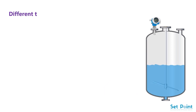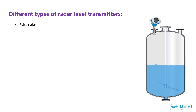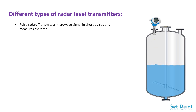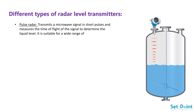Different types of radar level transmitters. Pulse radar transmits a microwave signal in short pulses and measures the time of flight of the signal to determine the liquid level. It is suitable for a wide range of media and industrial environments because of its short operating time.